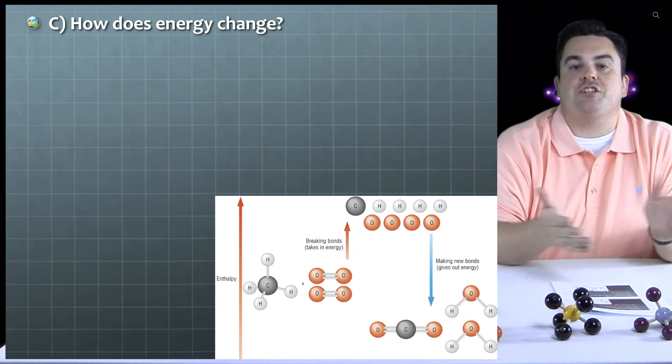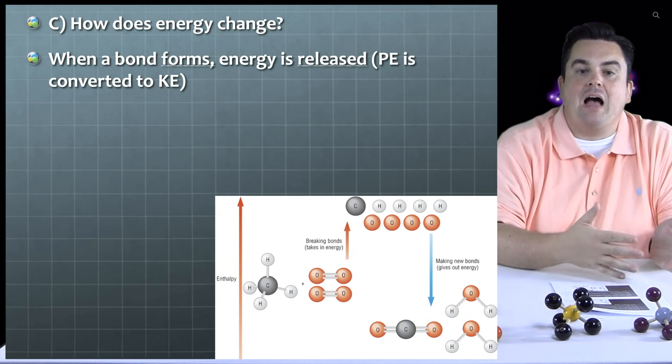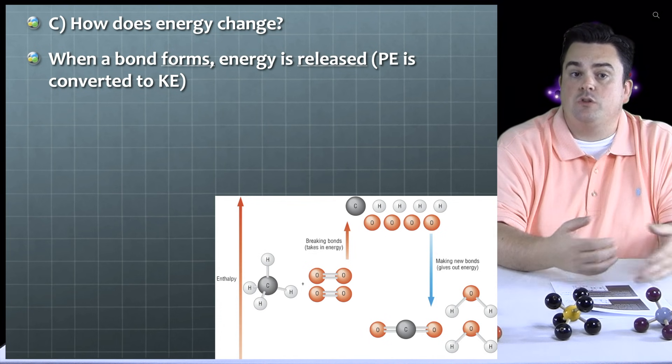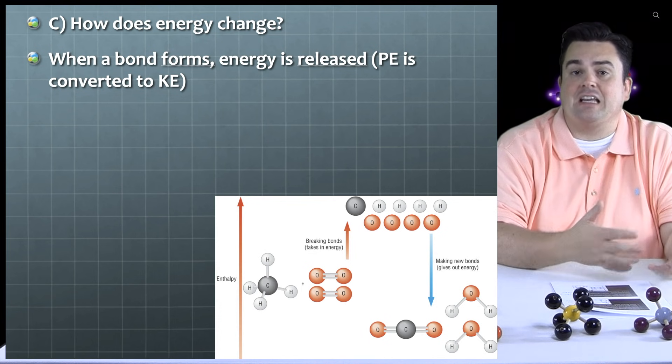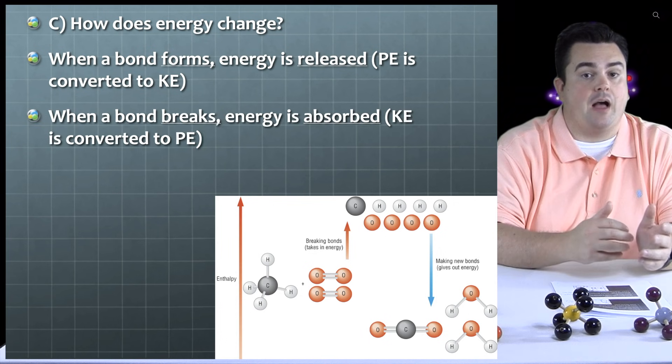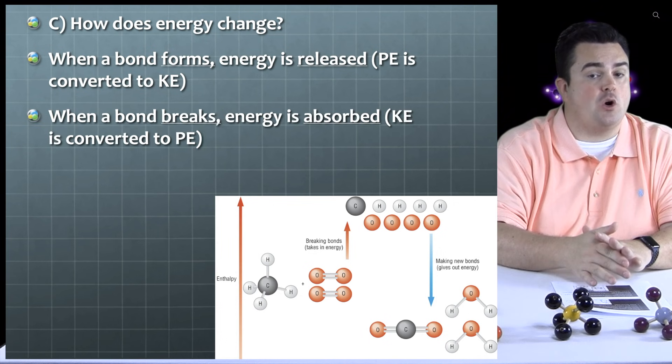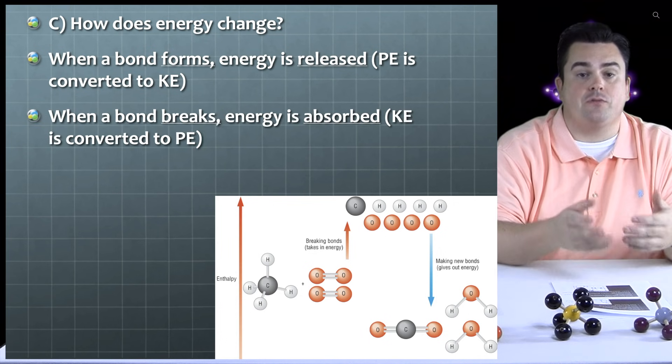They have a lower potential energy to that minimum point there at the bottom as we proceed from right back to that left point. So how does energy change? When a bond forms, energy is released, which means potential energy is converted into kinetic energy. When a bond breaks, energy is absorbed, which means kinetic is converted into potential.